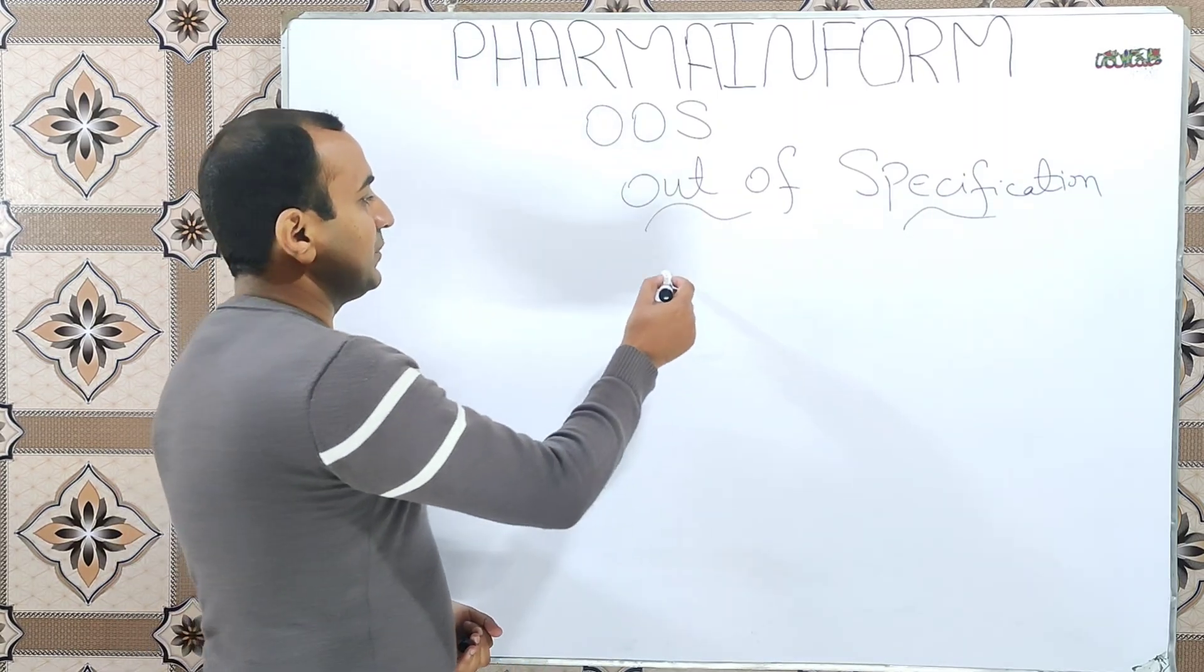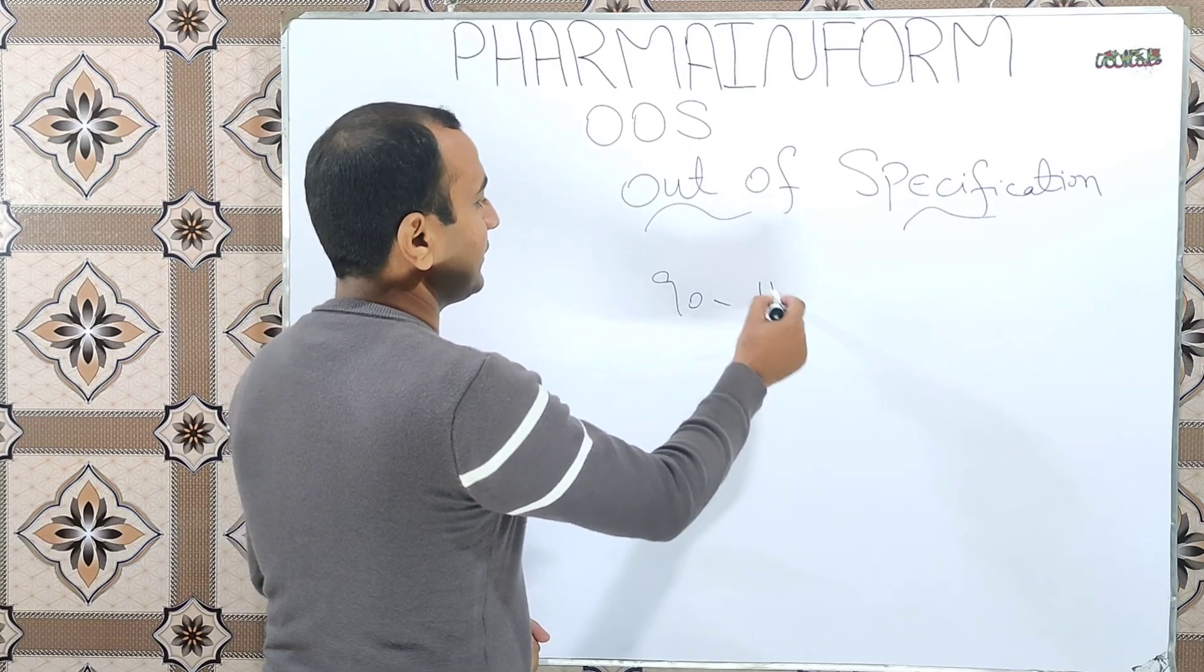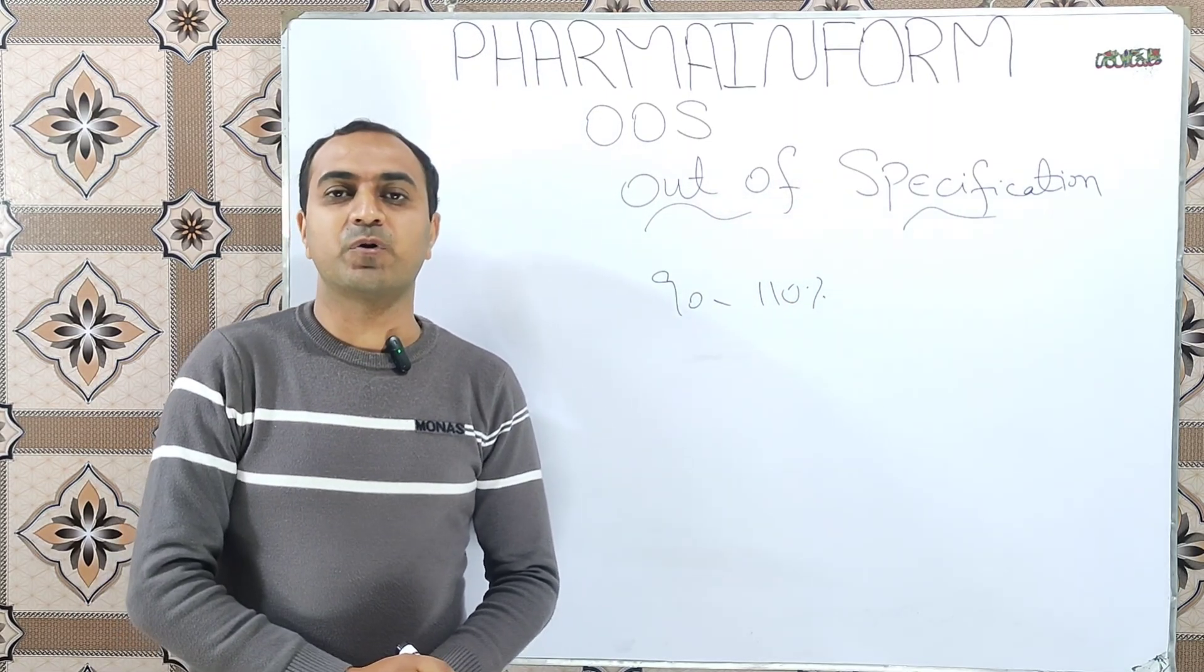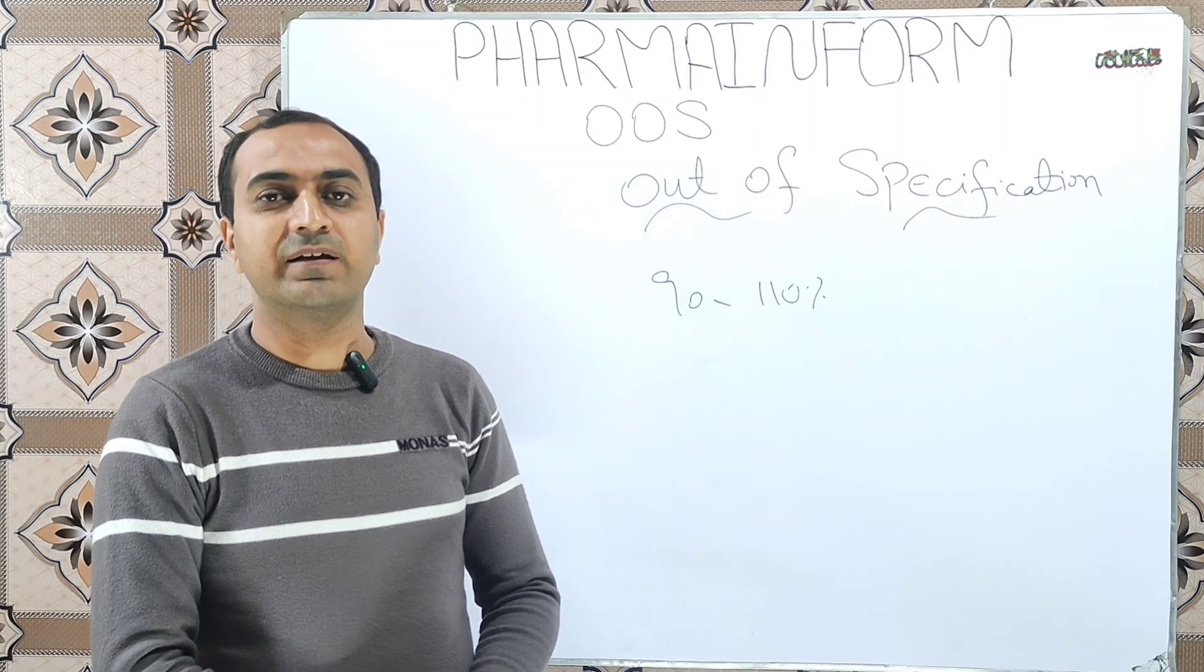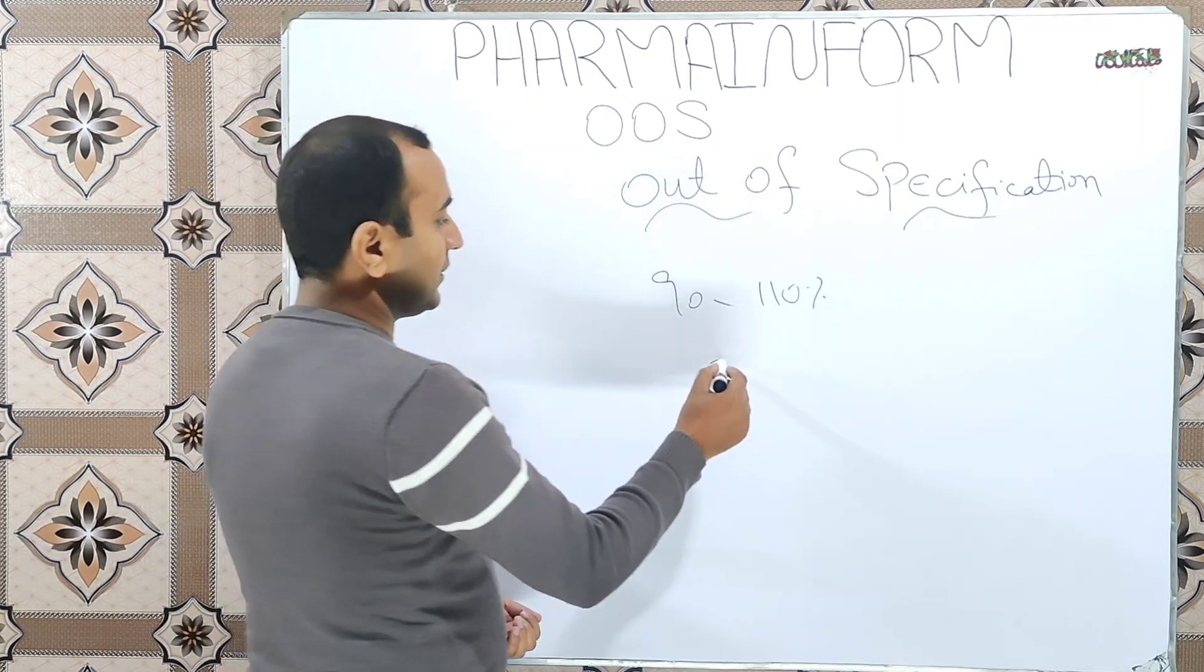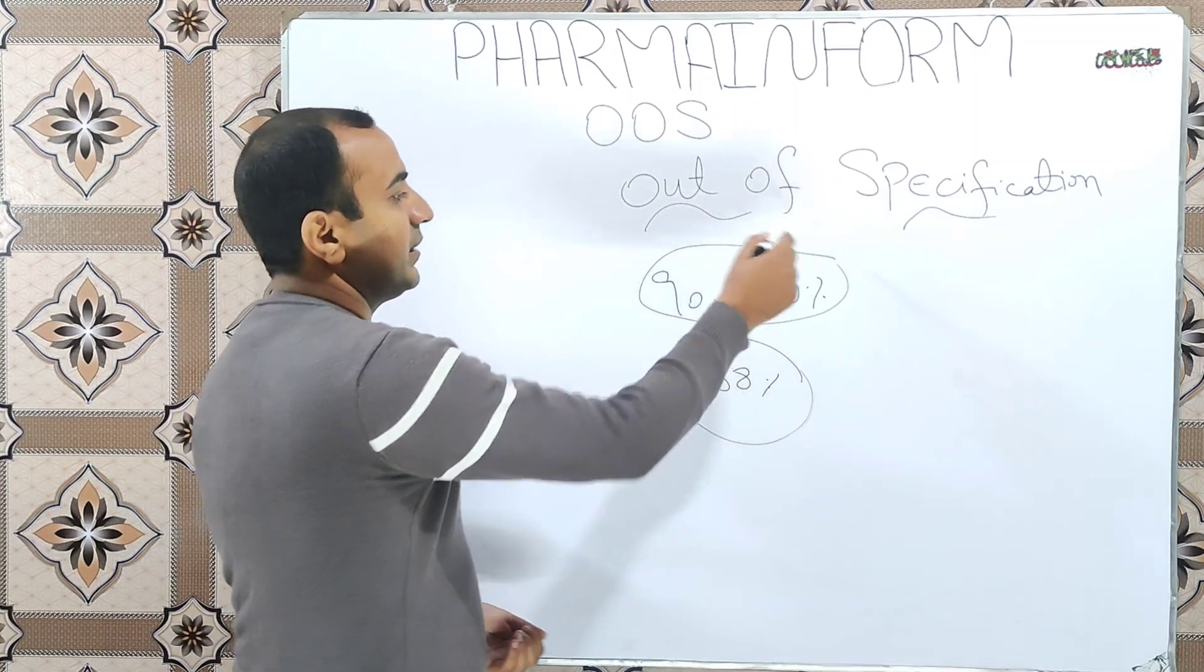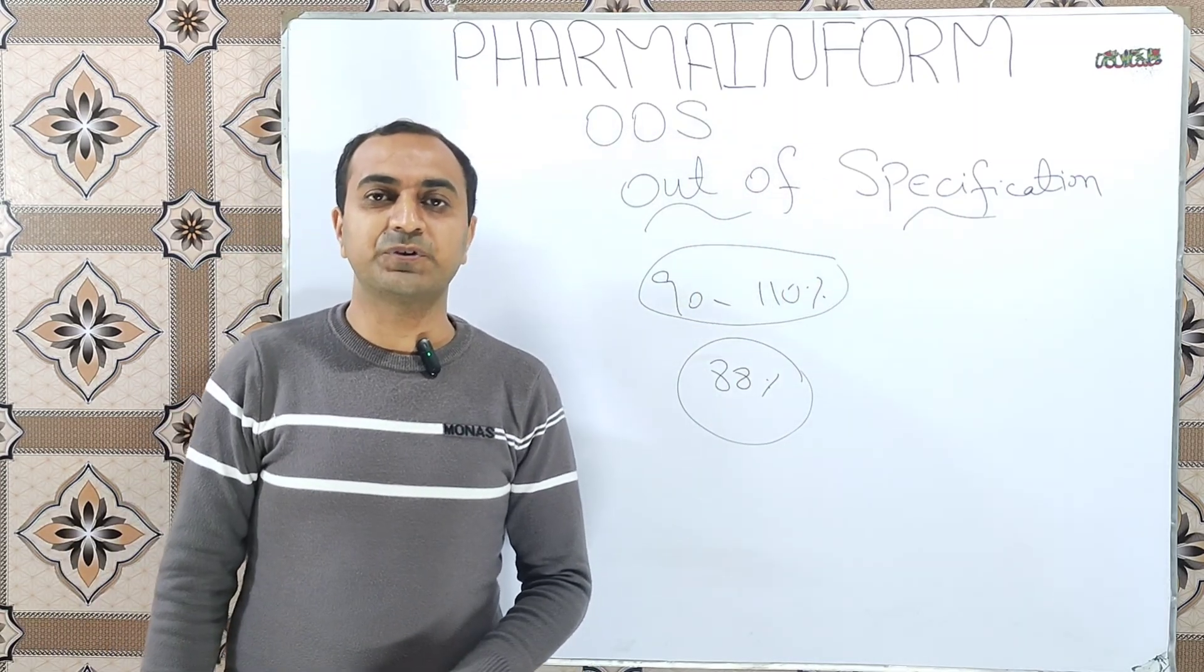The established assay limits are 90 to 110 percent. We perform analysis of product A and find out that its results are 88 percent. So the specifications provided are 90 to 110 percent and we perform analysis of product A.